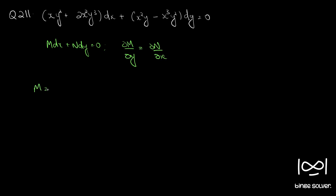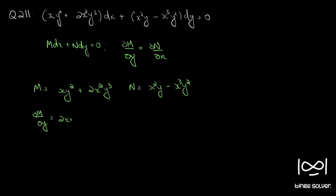Here M = xy² + 2x²y³ and N = x²y − x³y². So ∂M/∂y = 2xy + 6x²y² and ∂N/∂x = 2xy − 3x²y².